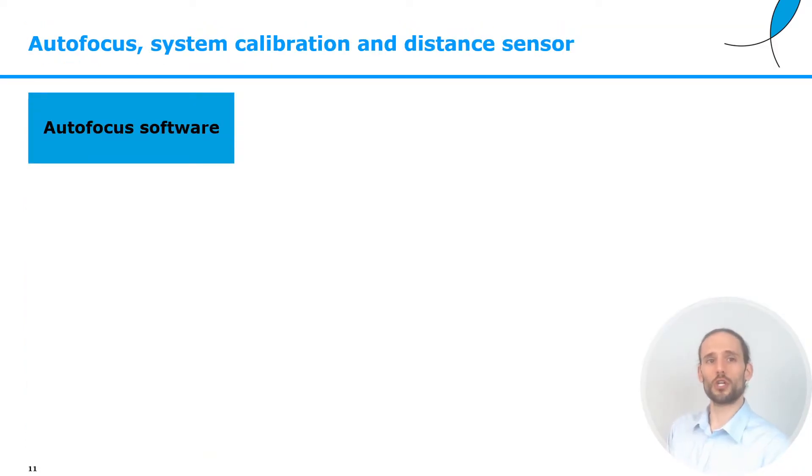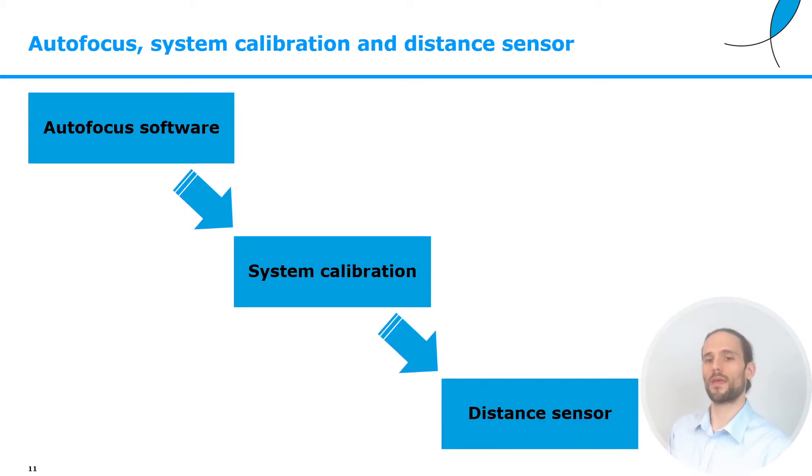In order to program an efficient distance sensor, we need first to develop two tools. We need to program an autofocus, then we need to calibrate our system. And of course, this calibration will be different for different systems, but this calibration routine must be done only once for a certain system. Then we can use these two tools and program a distance sensor.